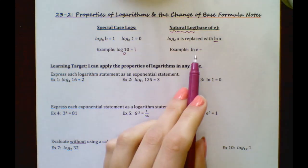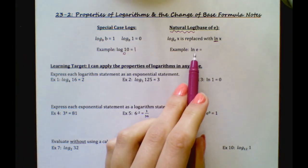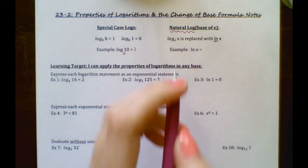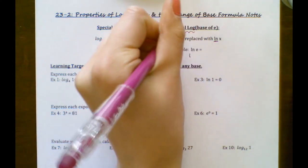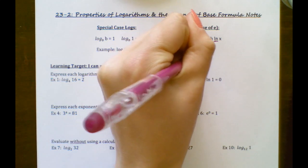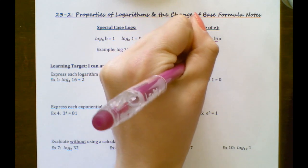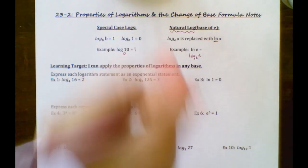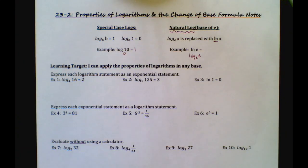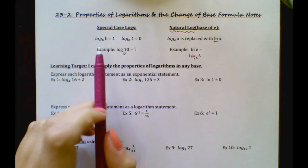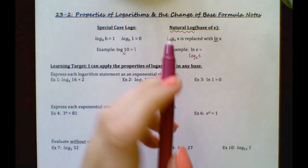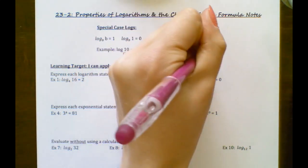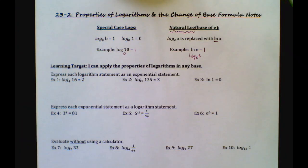In this example, ln of E — if you want to rewrite it to have log of base E, it would be log base E of E. And again, using this special case where both values are the same, this would actually just equal 1 as well.